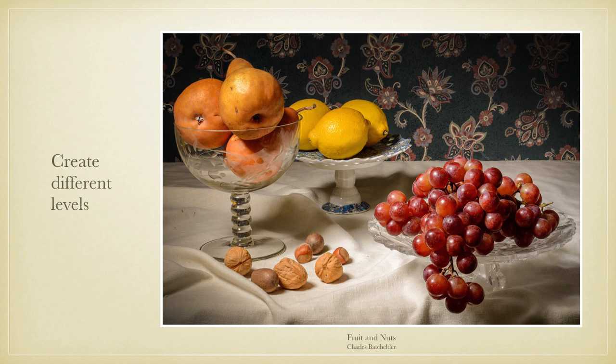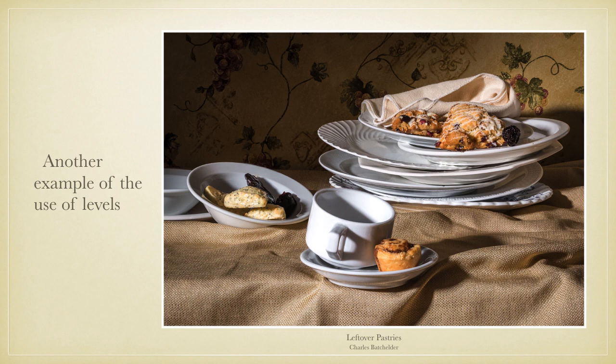Try to create different levels in your still life photograph if you can. Creating different levels can be a challenge, but it makes a real difference to the look of the image. Here I have used cake stands and a small bowl on a pedestal to create the different levels. In a different kind of still life, things like piles of books or objects piled on top of each other can be used to create levels. In this photograph, the stacked plates create a level that elevates the larger scones and separates them from the other pastries.